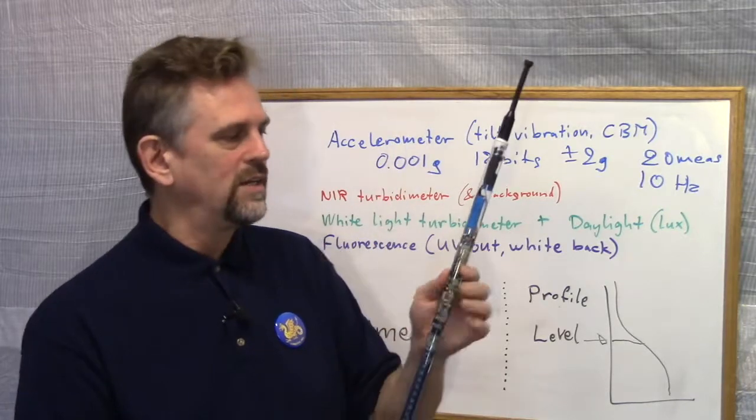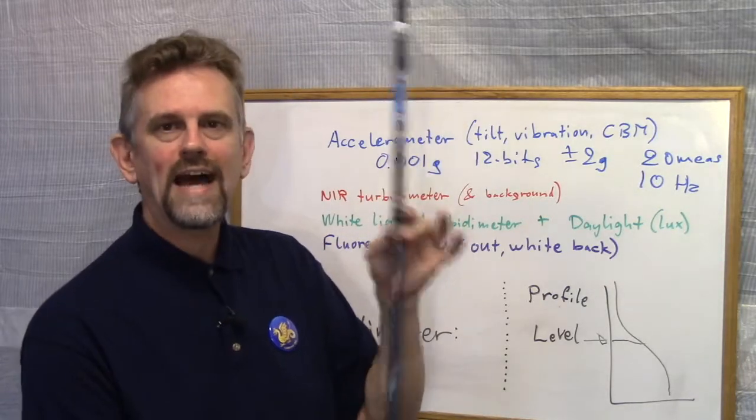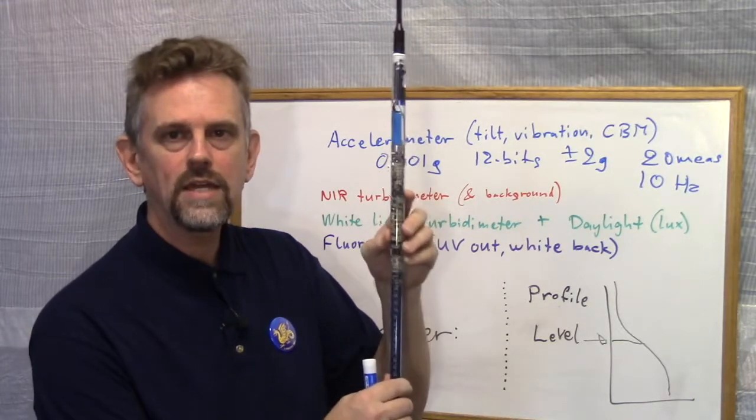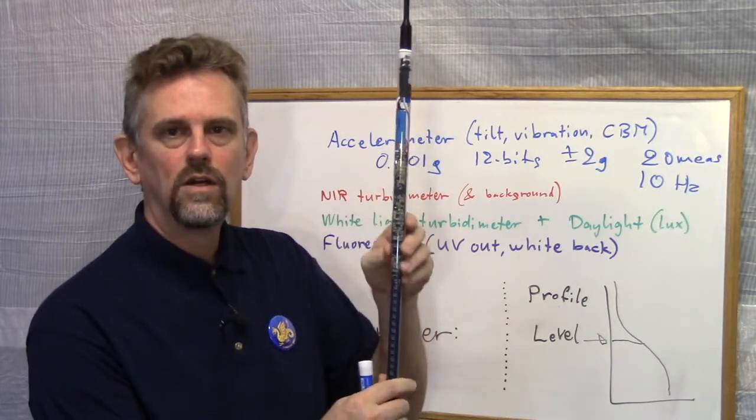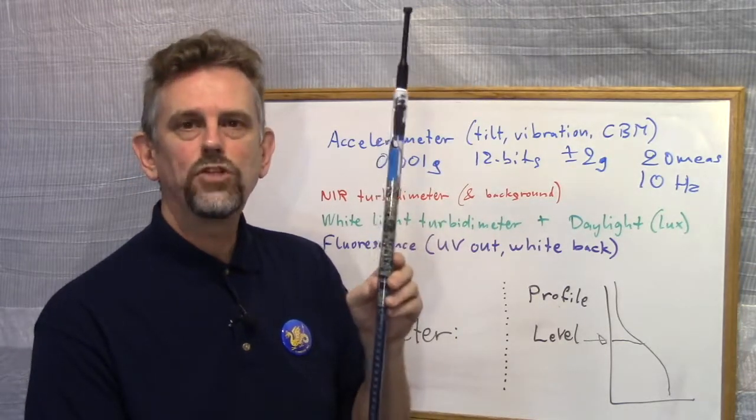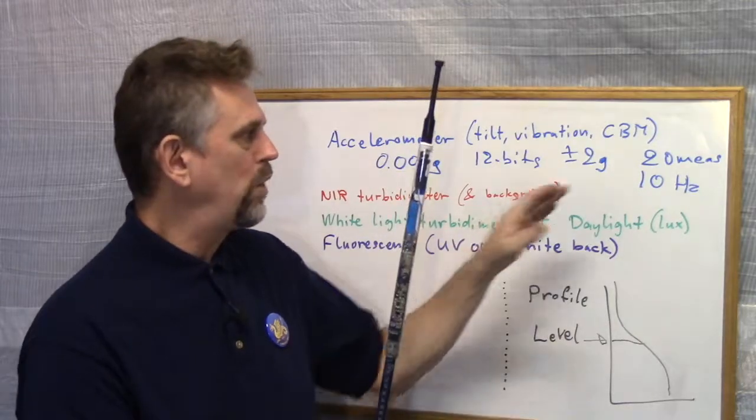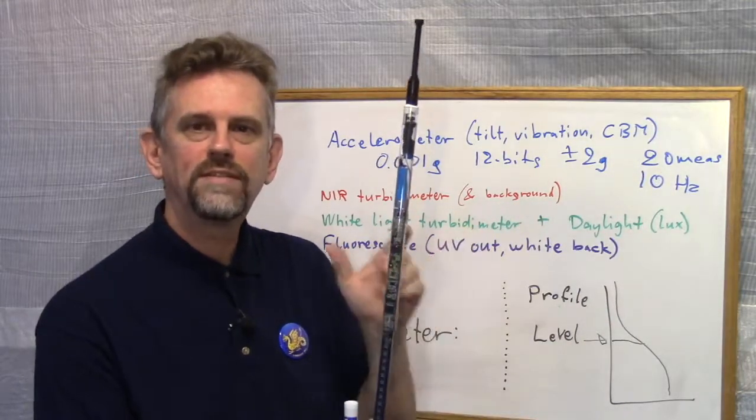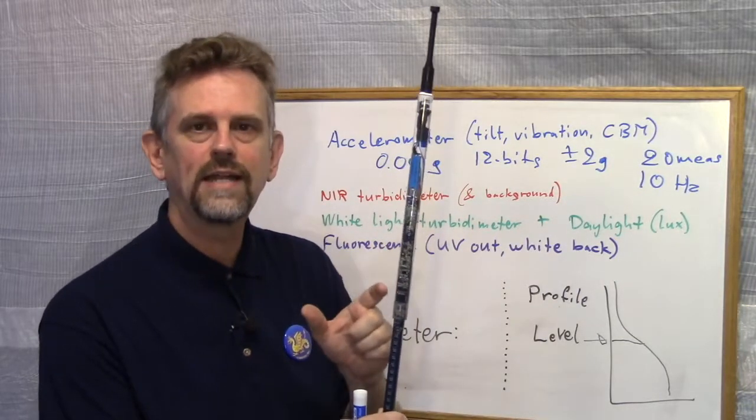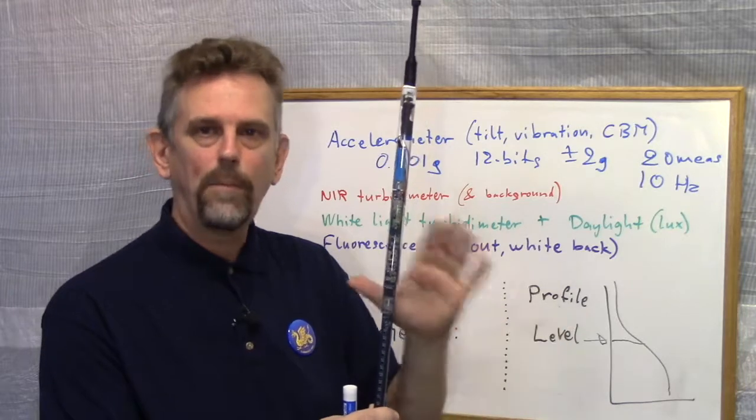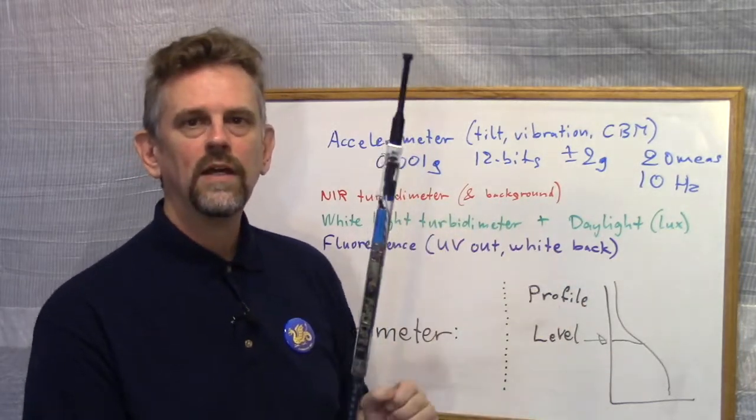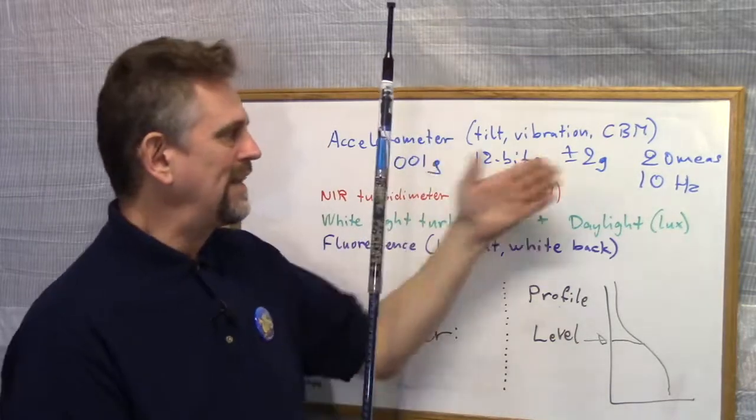So that when the processor wakes up every second to update the clock, every second when it wakes up, it's checking, has the accelerometer set a flag? And if it has, it will do an extra measurement. This means that apart from the regularly timed measurements, if there is some event, like shaking, being hit, or changing angle, there will be an extra measurement made, which will store approximately 10 accelerometer measurements before the event and 10 accelerometer measurements after the event. Approximately, I say, because it depends on where in the second this happens.